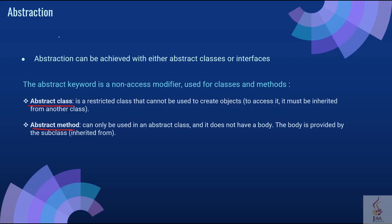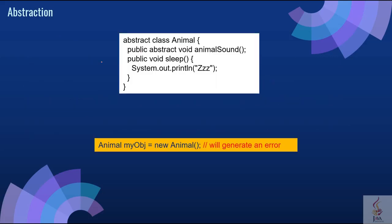The main purpose of abstraction is hiding the unnecessary details from the user. Abstraction is selecting data from a larger pool to show only relevant details of the object to the user. It helps in reducing programming complexity and efforts. It is one of the most important concepts of object oriented programming. An abstract class can have both abstract and regular methods — for example, 'public abstract void animalSound' and 'public void sleep'. It is not possible to create an object of an abstract Animal class; it will show an error.